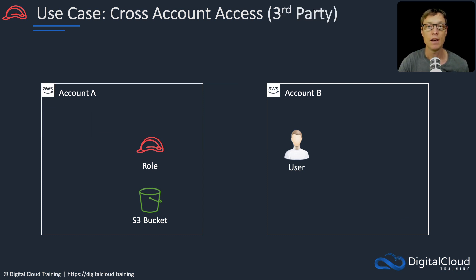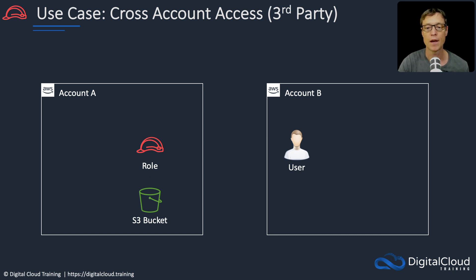The next use case is very similar — almost identical. The difference is I mentioned third party here. The reason being is if you own both accounts, that's one thing. But if you're allowing people from external companies, third parties, to assume your roles, you always have to share the ARN of the role with them. And there can be some security issues with doing that. So what we do instead is we add something to secure this connection to make sure that only the people we want are able to use the shared ARN of the role and assume that role.